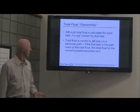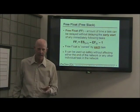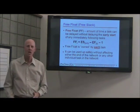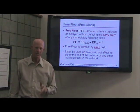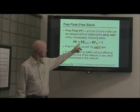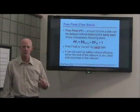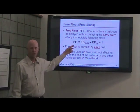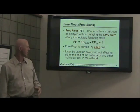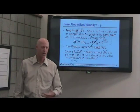To contrast that, free float is owned by the individual task — it doesn't get shared. Free float is the amount of time you can delay a task without delaying any successor task in the schedule. The calculation is simple: take the early start of the next task minus the early finish of the current task, minus one. That gives you the free float value for that task. It's owned by the task and will not impact anybody else in the schedule.